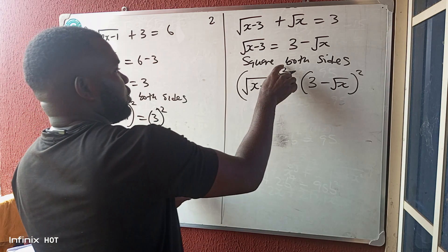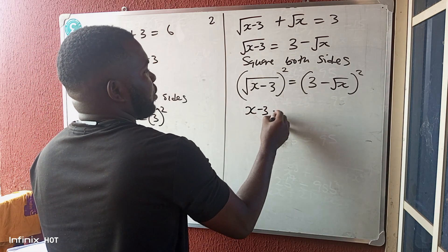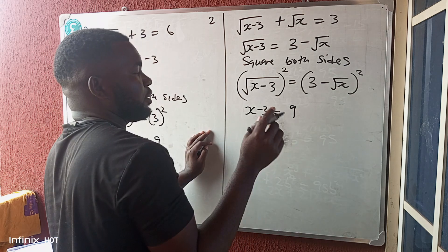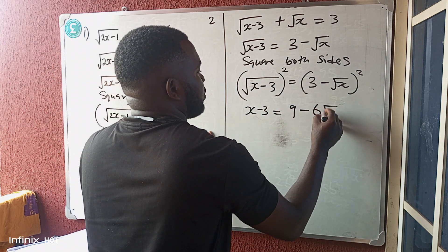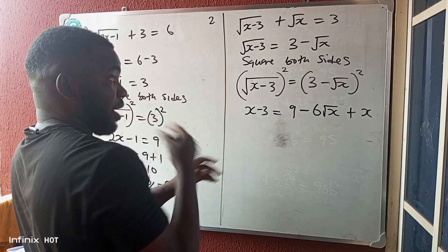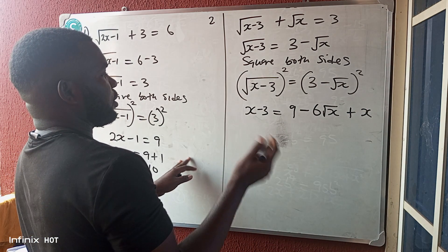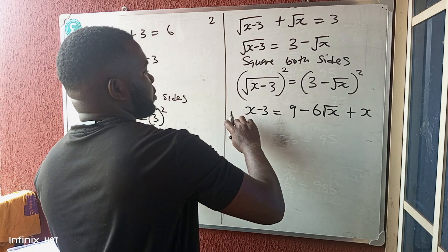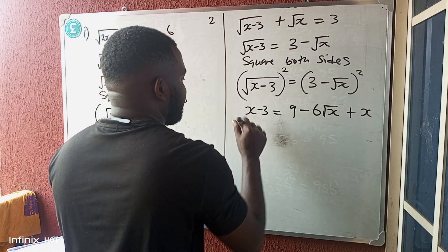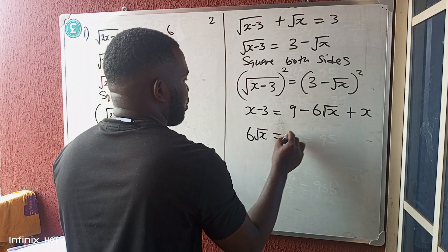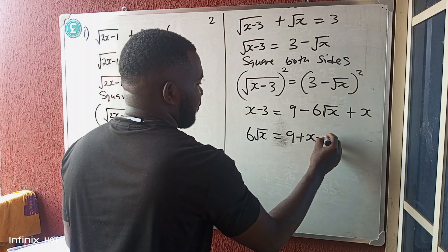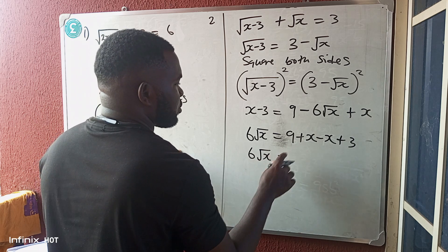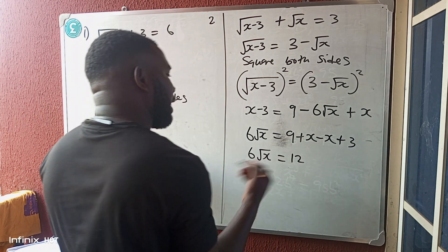The left side simplifies to x - 3. On the right side, we expand: square the first term to get 9, multiply first and second terms doubled to get -6√x, and square the last term to get x (since minus squared is plus). Now collect terms, leaving the square root on one side: 6√x = 9 + x - x - 3 + 3... simplifying gives 6√x = 12.